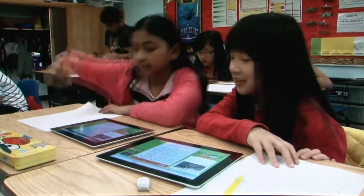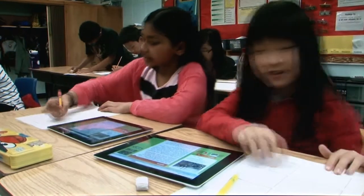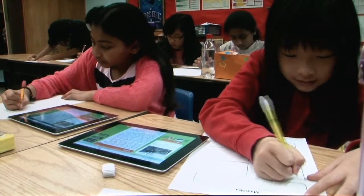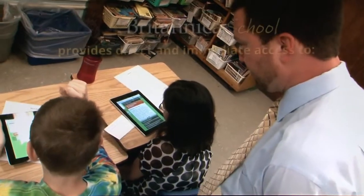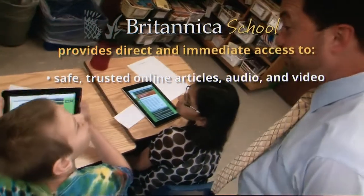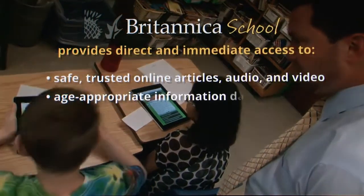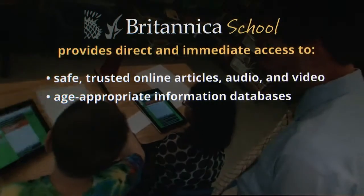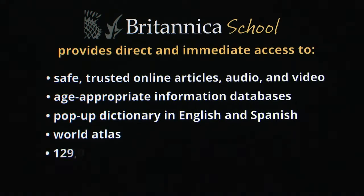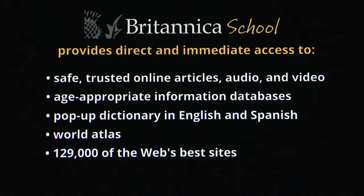Britannica School offers a wide variety of content in one safe place. There are thousands of articles from magazines and journals directly related to search topics, as well as 90,000 images, videos, and audio clips. It also provides access to age-appropriate information databases, a pop-up dictionary in English and Spanish, World Atlas, and 129,000 of the web's best sites for research and learning.